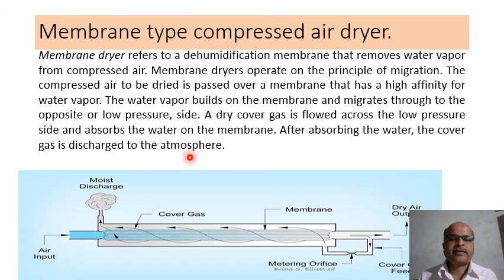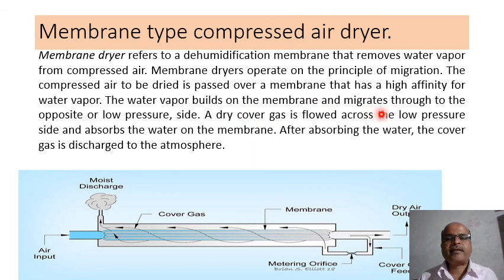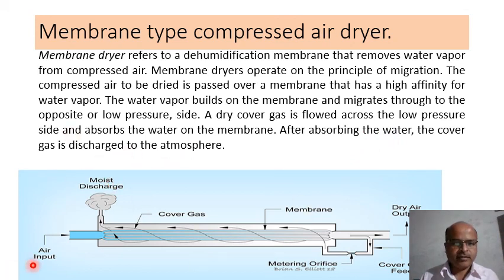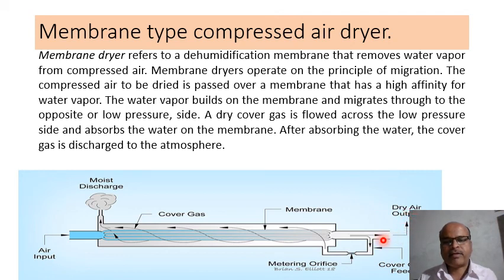Membrane type compressed air dryer: The membrane type refers to a dehumidification membrane that removes water vapor from compressed air. Membrane type dryers operate on the principle of migration. The compressed air to be dried is passed over a membrane that has a high affinity for water vapor; the water vapor builds on the membrane and migrates through to the opposite lower-pressure side. A dryer cover gas flows across the low-pressure side, absorbs the water on the membrane, and is then discharged to the atmosphere. The diagram shows: air input, moist discharge, cover gas, membrane, and dry air output.